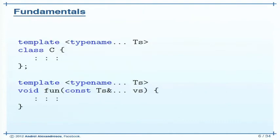Fundamentals. It starts very easy — doesn't it always? You may define a template class that takes `typename...`. By the way, `typename` can be replaced with `class`, but `typename` came back in vogue since the dot-dot-dot came about, because `class...` is not one or more classes, it's one or more types. So it's `typename...`. Or you can define a function that takes `T...`.